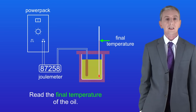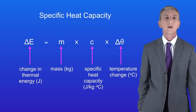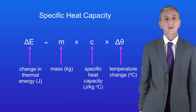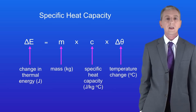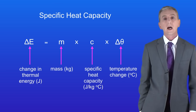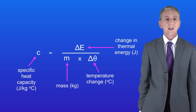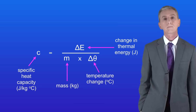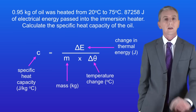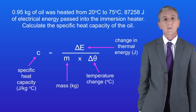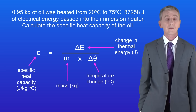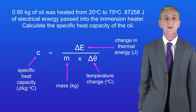Now we've got all the information we need to calculate the specific heat capacity of the oil. The change in thermal energy equals the mass multiplied by the specific heat capacity multiplied by the temperature change. We rearrange this equation: the specific heat capacity is the change in thermal energy divided by the mass multiplied by the temperature change. Here are the results: 0.95 kilograms of oil was heated from 20 degrees Celsius to 75 degrees Celsius, and 87,258 joules of electrical energy passed into the immersion heater.